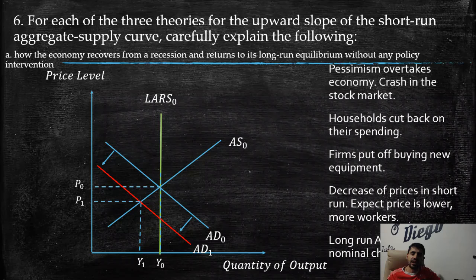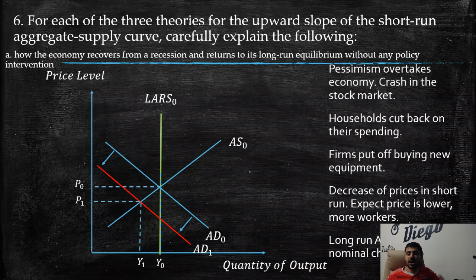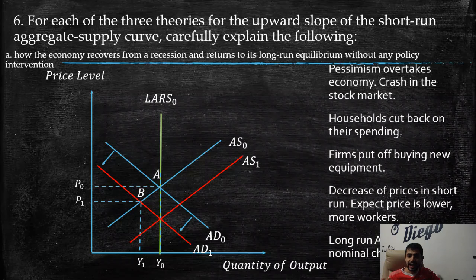In this situation, households cut back on spending, so there is a decrease in consumption. Furthermore, firms put off buying new equipment. Because prices decrease in the short run, we face lower output supplied by producers since prices are lower. When prices are lower, it also becomes possible to hire more workers.